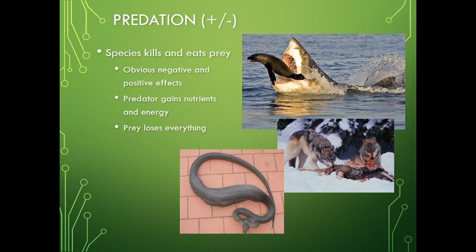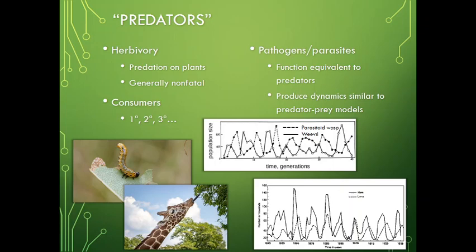The predator gains the nutrients and energy from eating that organism. The prey obviously loses its life and loses everything. For the purpose of this class, I want to talk about predators in a very general sense — really including herbivory. Herbivory can be thought of as just predation on plants. It's generally non-fatal on a plant unless you have a whole bunch of herbivores eating an entire plant. Most herbivory interactions give the plant some ability to resist.